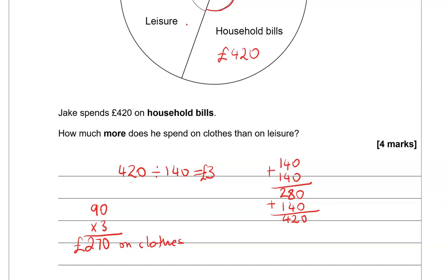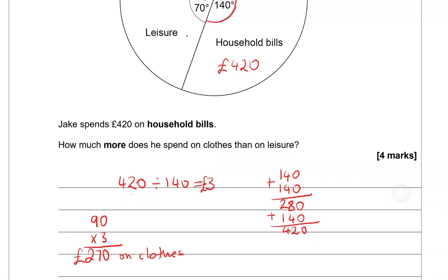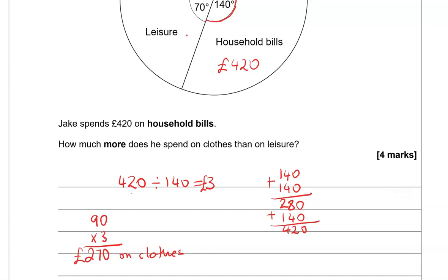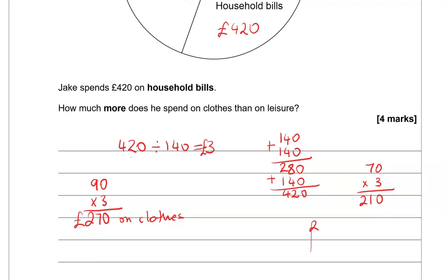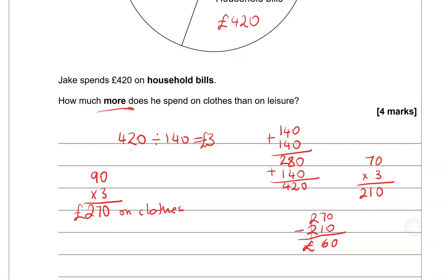Now leisure, we've got 70 degrees. So we're going to do 70 times 3. 3 times 0 is 0, 3 times 7 is 21. So 210. So 270 take away 210, that gives us a difference of 60 pounds. So that's how much more he spends on clothes than on leisure.